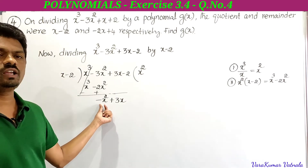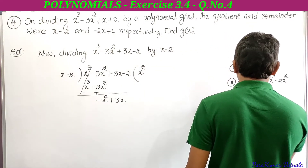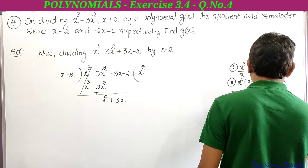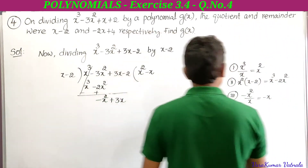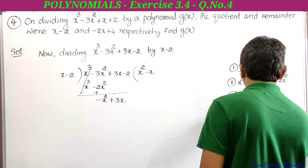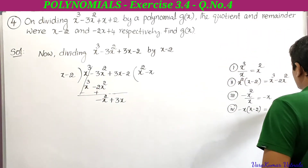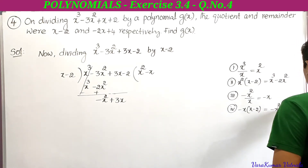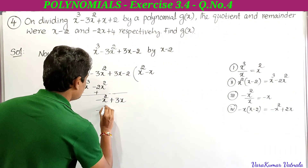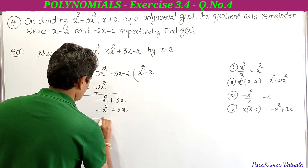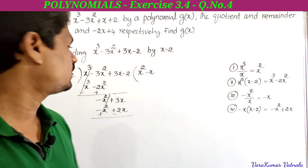The next highest degree term is -x². Dividing -x² by x gives -x. Write -x in the quotient area. Multiply -x by (x - 2): -x·x = -x² and -x·(-2) = +2x. Write -x² below -x² and +2x below 3x. Subtract: -x² cancels, and 3x - 2x = x. Bring down -2.